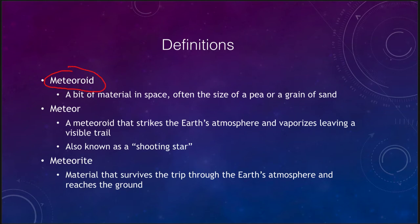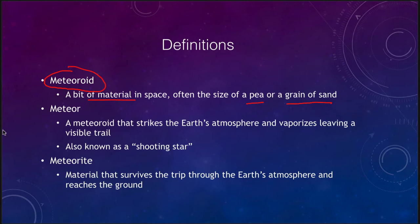A meteoroid is the first definition — that is the bit of material when it is out in space. These can be very small things like a grain of sand or a pea, small pebbles, very tiny objects out in space. We call those meteoroids. We have no way of detecting any of these; they're way too small to ever see unless they happen to strike the Earth's atmosphere.